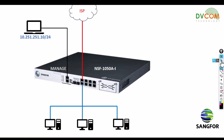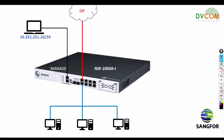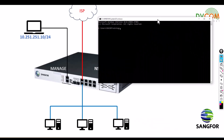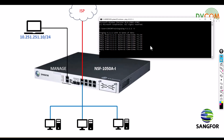Now let's open the command prompt. I'll ping a public DNS server — type ping 4.2.2.2. Right now you can see I can ping 4.2.2.2 because I have internet access.